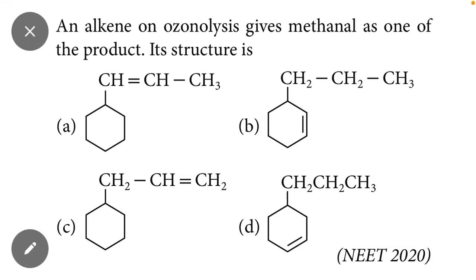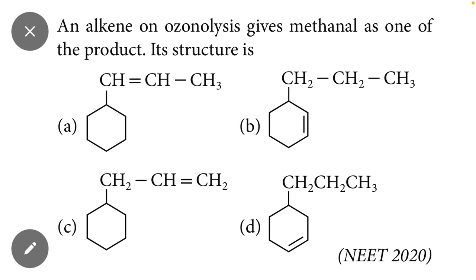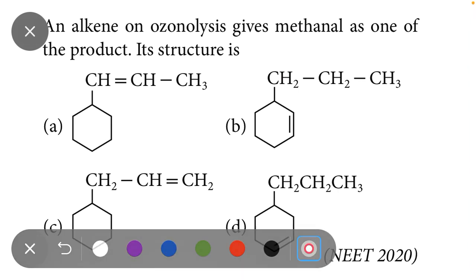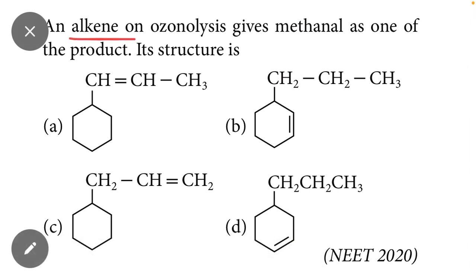Welcome to Chemistry Academy. In this video, I will teach you a most important question related to ozonolysis, along with a simple trick. The question is: an alkene on ozonolysis gives methanal (formaldehyde). When we do the ozonolysis of an alkene molecule, the final product will contain methanal — identify that molecule.